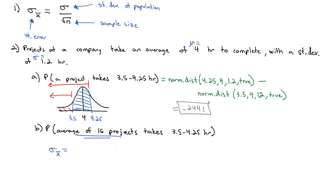To calculate the new standard error to use in our calculation, we take the standard deviation — which was 1.2 — and divide by the square root of 16. In this case, the answer comes out to 0.3, but we're going to use the exact value, because in Excel we get more accurate answers with exact values, and sometimes the square root and division doesn't come out very pretty. So we'll use 1.2 divided by the square root of 16 to replace sigma in the Excel command.